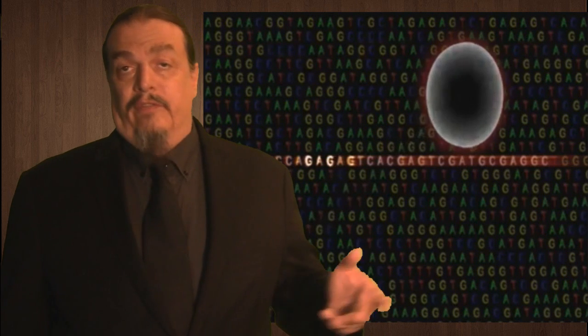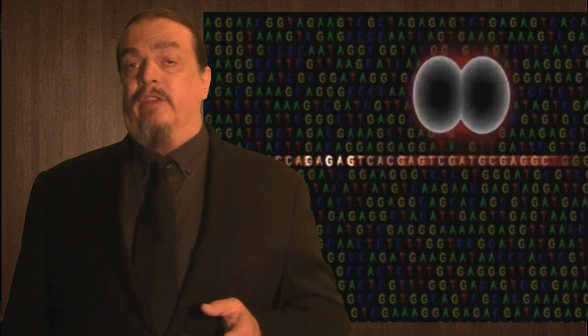That's a lot harder to do with multicellular organisms, but it still happens on rare occasions. Some viruses, called retroviruses, insert their own DNA into the genome of the cells they infect. If this happens in a sperm or egg, then the developing organism will inherit the viral DNA sequence as part of its own genetic makeup. These copies of viral DNA are called endogenous retroviruses, or ERVs.